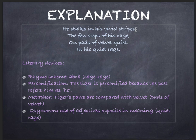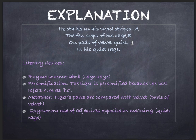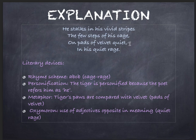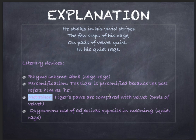So the rhyme scheme will be A, B, A, B — and then C, and then again B — because the third one is not rhyming with the first one, so we are making it C. The first figure of speech is personification, where non-human things are personified. Here, the tiger is personified. The second figure of speech is metaphor — the tiger's paws are compared with velvet, so here it is metaphor.